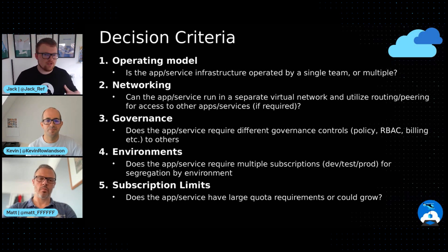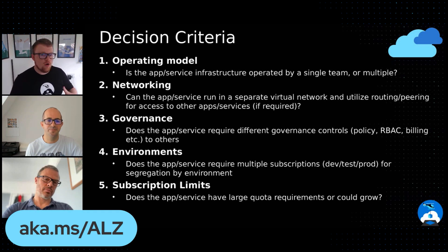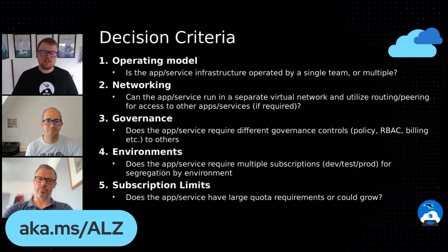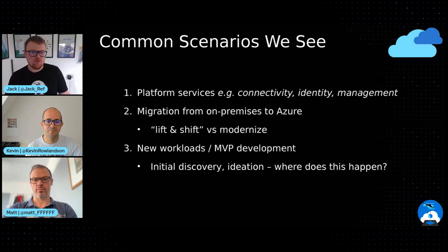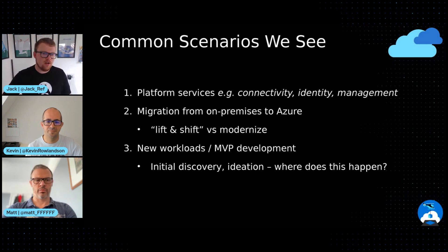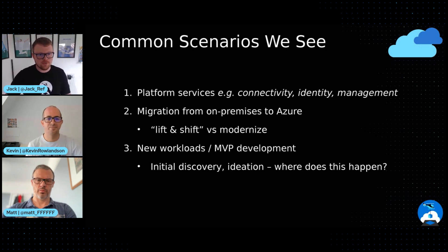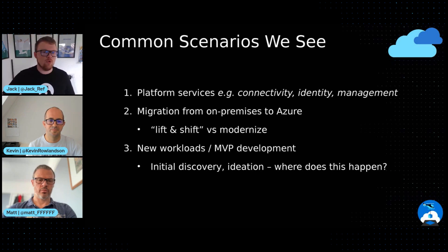To make this more real, a common scenario we've designed as a starting point is separating out platform components — connectivity, identity, and management. We suggest three subscriptions for these, each living beneath separate management groups under the platform management group, because they have different governance profiles in terms of who needs access and what controls apply. From a scale perspective, if you have a large networking requirement, it's easy to add more connectivity subscriptions in that same management group hierarchy, knowing the controls remain consistent.